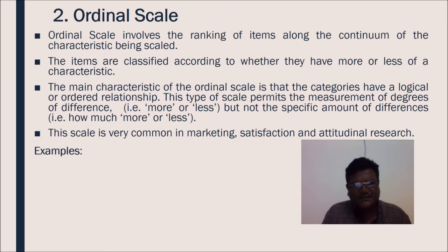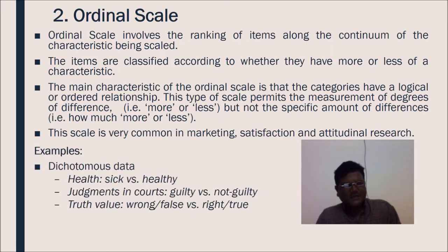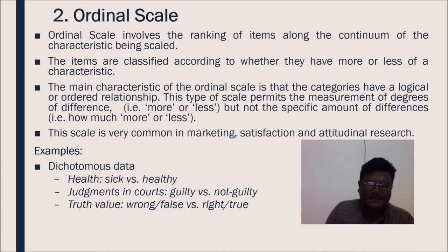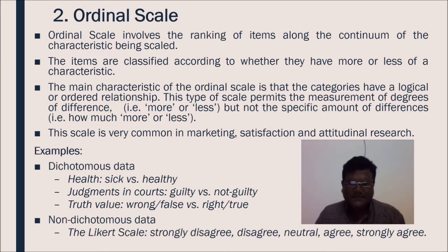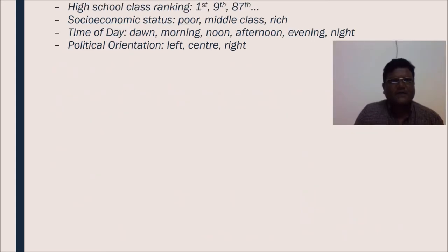This scale is very common in marketing, satisfaction and attitudinal research. Examples of this scale: dichotomous data. We can divide health in sick versus healthy. Judgments in guilty versus non-guilty. Truth value - wrong or false versus right or true. Non-dichotomous data. The Likert scale - strongly disagree, disagree, neutral, agree, strongly agree. High school class ranking - first, ninth, eighth, seventh, etc. Socioeconomic status - poor, middle class, rich. Time of day - dawn, morning, noon, afternoon, evening, night. Political orientation - left, center or right.